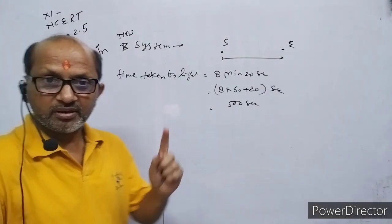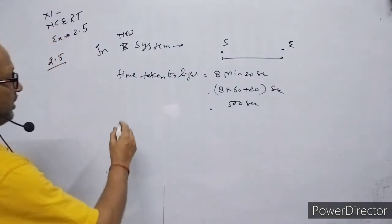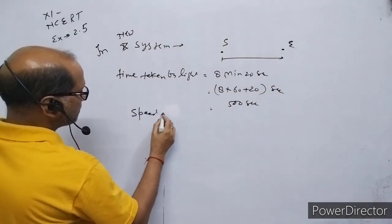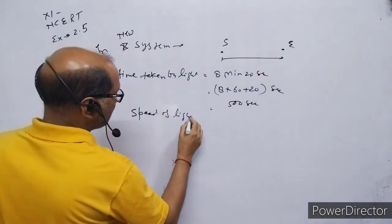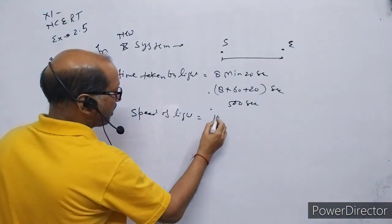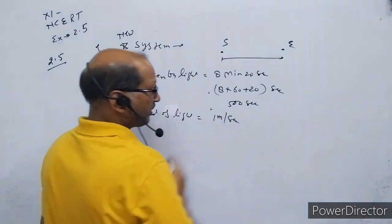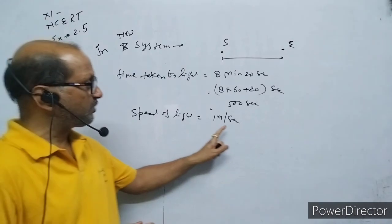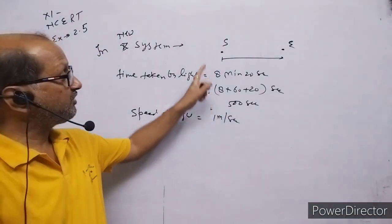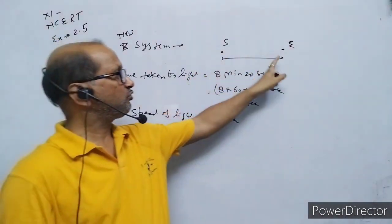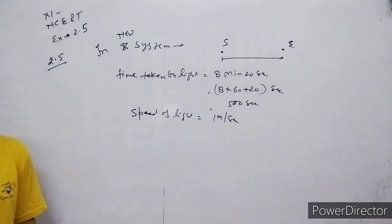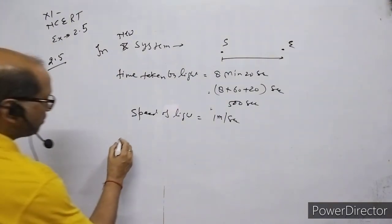The speed of light in the new unit is 1 unit per second. The distance from Sun to Earth corresponds to 500 seconds of travel time. So the distance will be calculated using the formula: distance = speed × time.